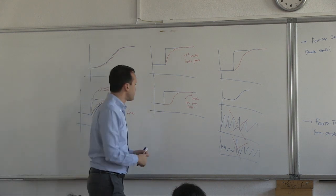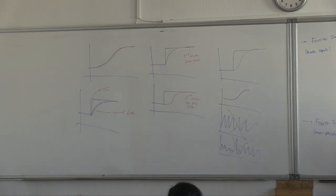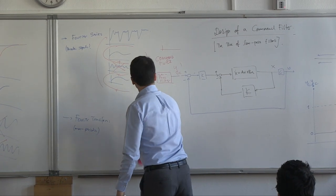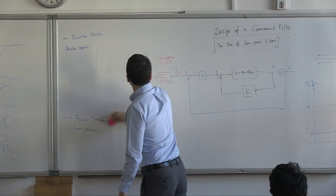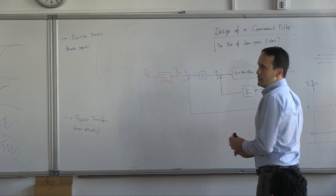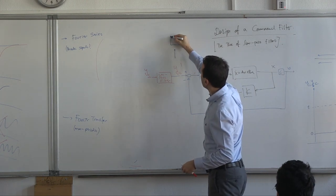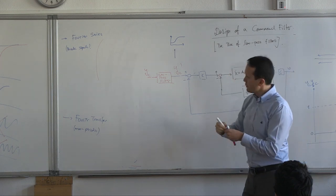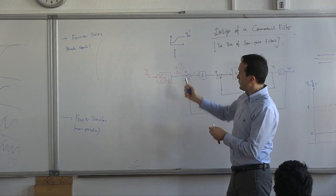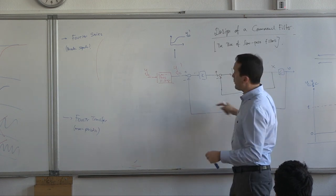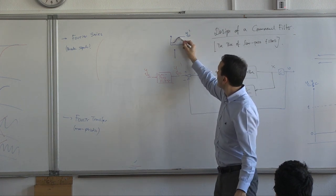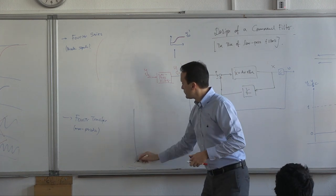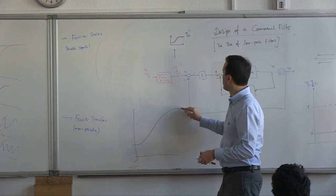What we really want is that whatever comes out of YC prime — the output of the low-pass filter — we want Y to follow it. This is YC prime. Theoretically, if there's no delay and you have a good controller, your aircraft should be able to follow this. Very small delay. This is what we want.